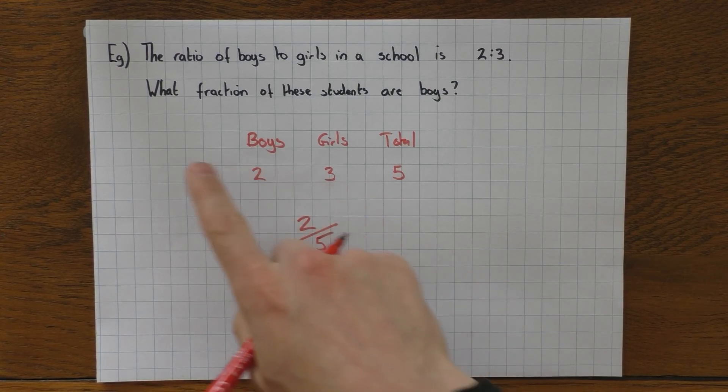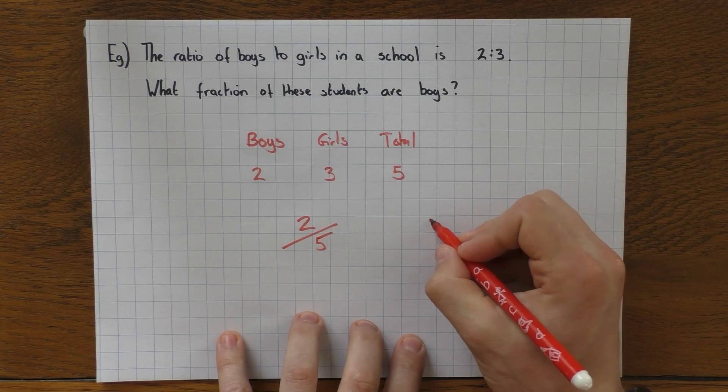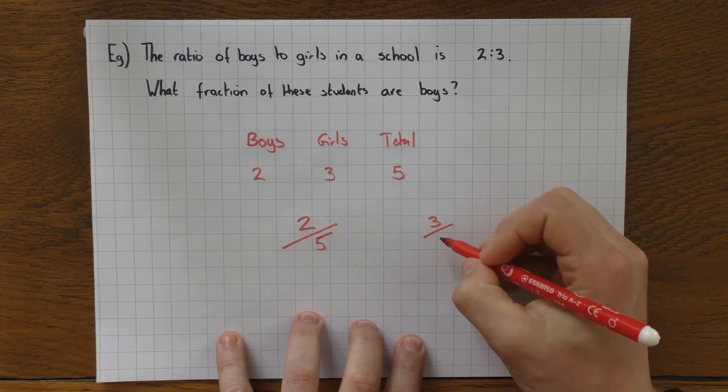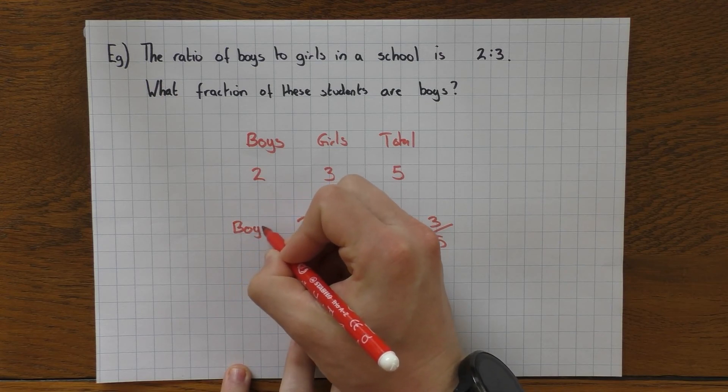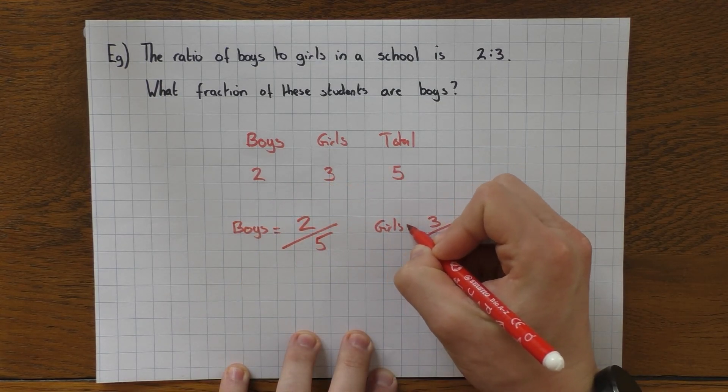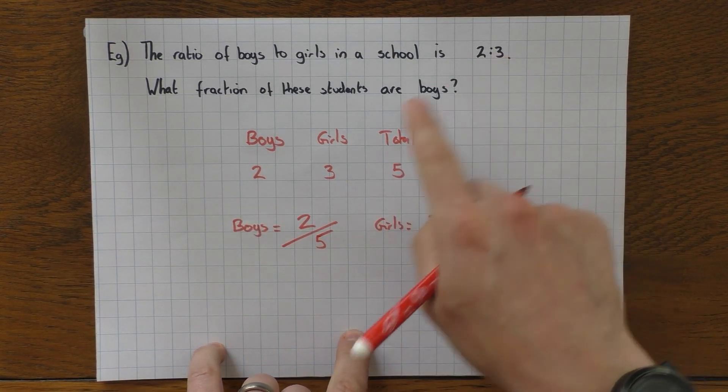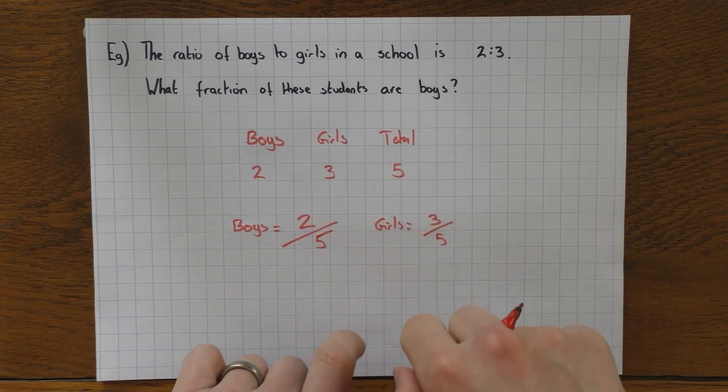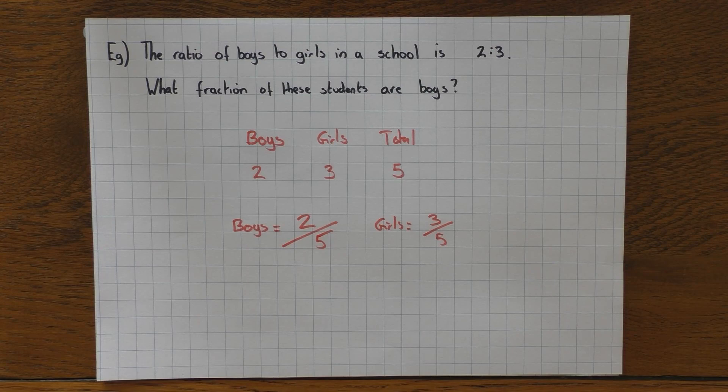What fraction of these students are boys? Well, there's 2 boys out of a total of 5, so we say it's two-fifths. Likewise, if the question said what fraction of these students are girls, well girls is 3 out of a total of 5, so I'd just put that as—that's what boys would be, and this is what girls would be. So by drawing a table like that, hopefully you won't fall into that trap of doing two over three, because the total is 5. So yeah, hopefully that helps guys. Sharing ratio—draw a table, makes everything easier. Thanks for watching.